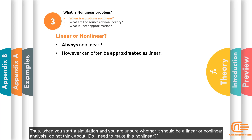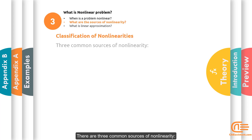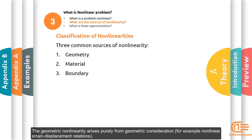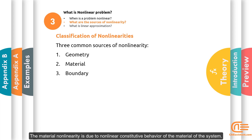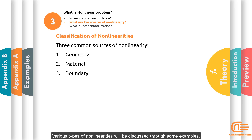Thus, when you start a simulation and you are unsure whether it should be a linear or nonlinear analysis, do not think about 'do I need to make this nonlinear?' Instead, ask yourself, 'can I approximate the response of the structure in this analysis as linear?' To answer this question, first you need to know the sources of nonlinearity. There are three common sources of nonlinearity: geometry, material, and boundary. The geometric nonlinearity arises purely from geometry considerations, for example nonlinear strain-displacement relations. The material nonlinearity is due to nonlinear constitutive behavior of the material of a system. The boundary nonlinearity may arise due to changing initial or boundary conditions. Various types of nonlinearities will be discussed through some examples.